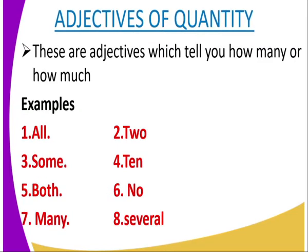Adjectives of quantity talk about number — they tell us how much or how many. Words used as adjectives of quantity include: all, some, both, many, two, ten, no, and several.